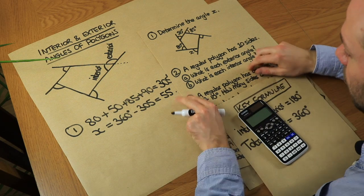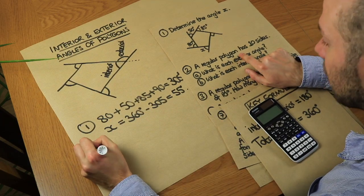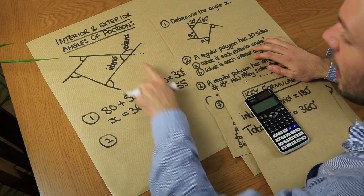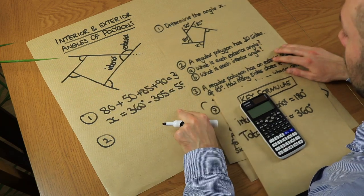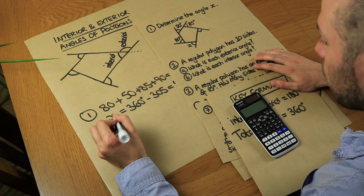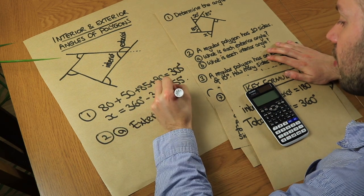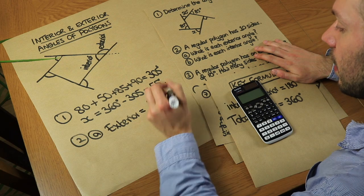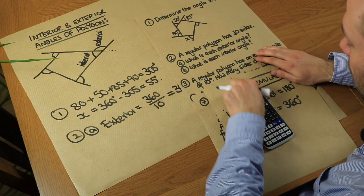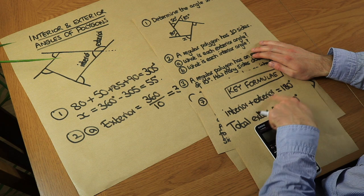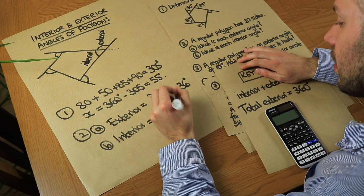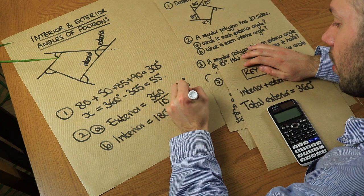Question 2: A regular polygon has 10 sides. What is each exterior angle? Since it's regular, all interior angles are equal and therefore all exterior angles are equal too. The exterior angles add up to 360°, so each exterior angle is 360 ÷ 10 = 36 degrees. And what is each interior angle? The interior and exterior angles add up to 180°, so the interior angle is 180 − 36 = 144 degrees.